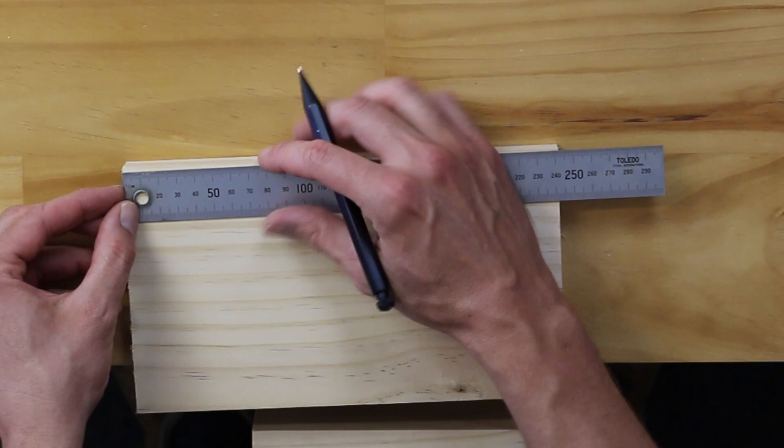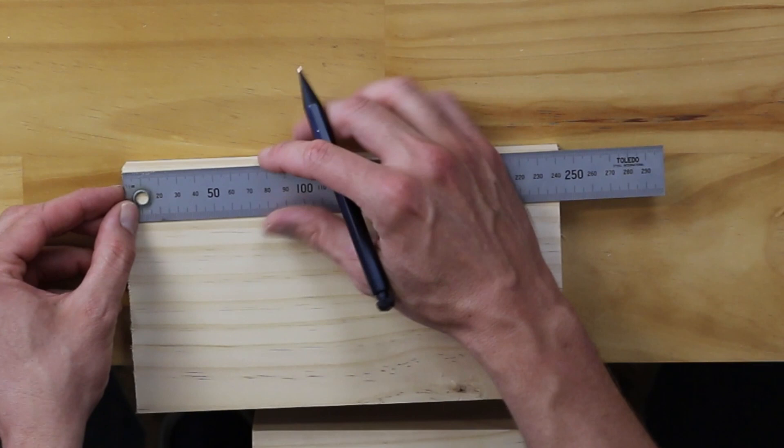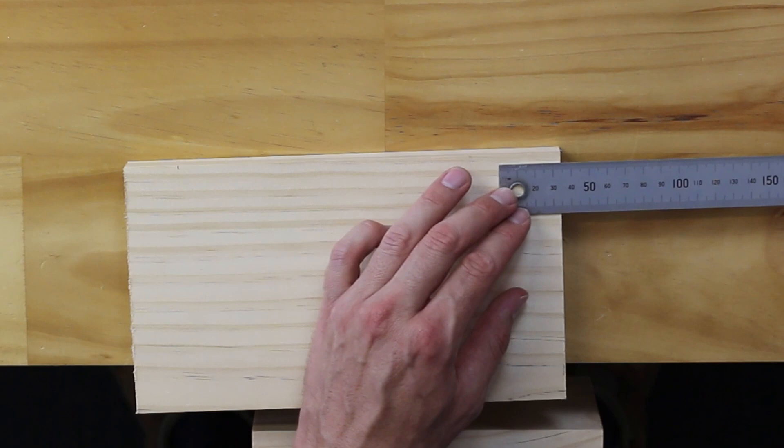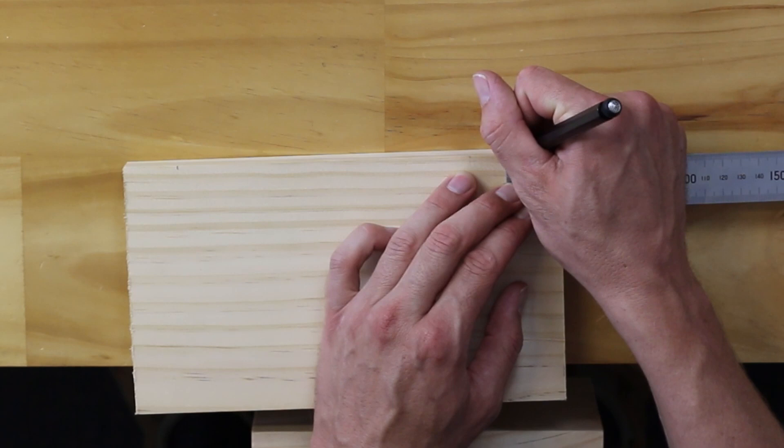From there, using your ruler, mark in 30mm from each edge. Ensure to keep the ruler close to the top edge to maximize precision and accuracy. Once you've done it to one end, repeat on the other.